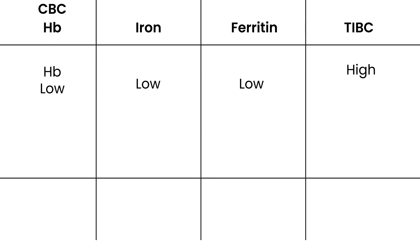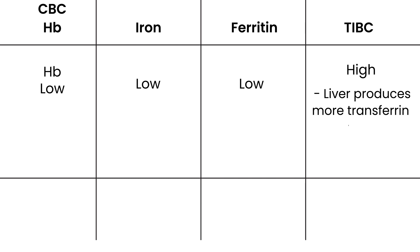Why is TIBC high? Because when there is iron deficiency, the liver produces more transferrin as a compensatory mechanism. The liver responds to low iron by making more transport molecules — transferrin — in an attempt to maximize the use of the little iron that's available. That is why TIBC is high.